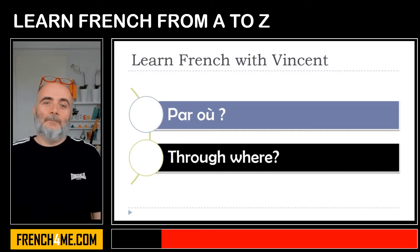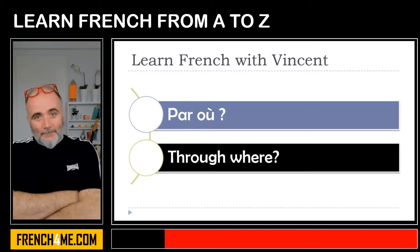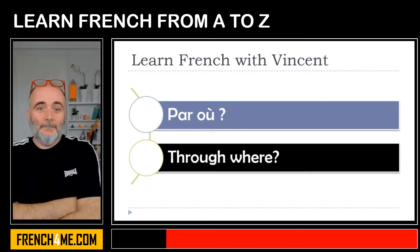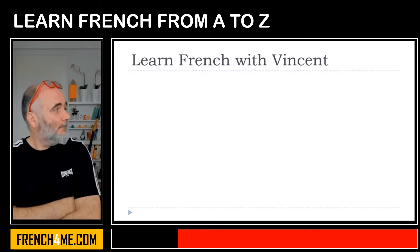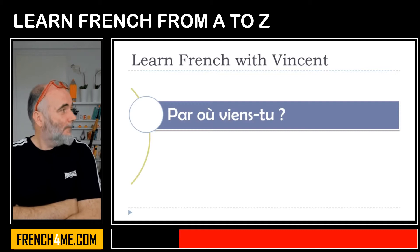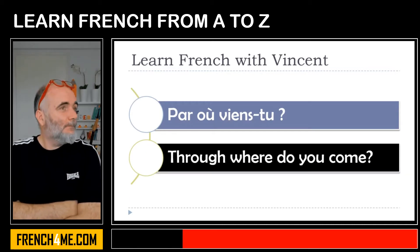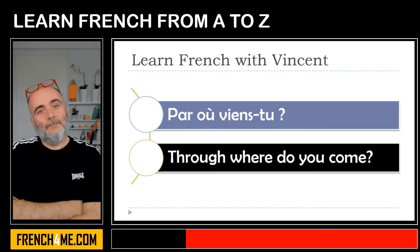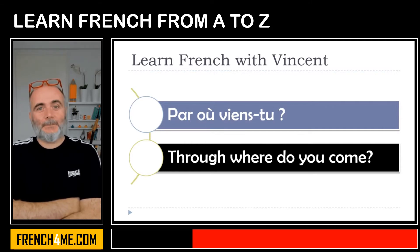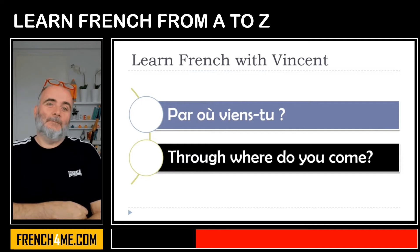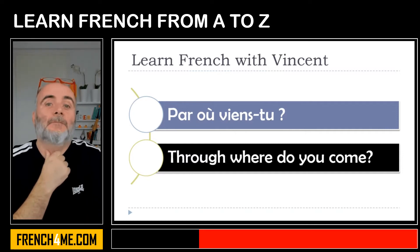Par où — 'through where'. Par où viens-tu ? Par où viens-tu ? Through where do you come? Par où viens-tu ?